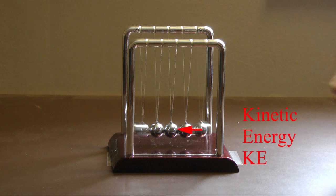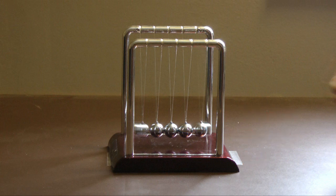At the bottom of the swing it now has maximum kinetic energy and strikes the row of spheres. The metal spheres interact in what physicists call an elastic collision. Energy is efficiently transferred from sphere to sphere resulting in the end sphere being displaced.